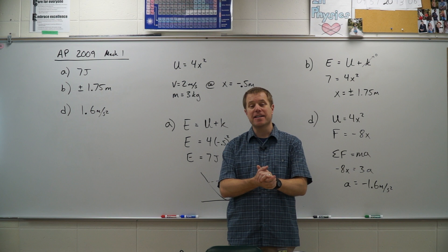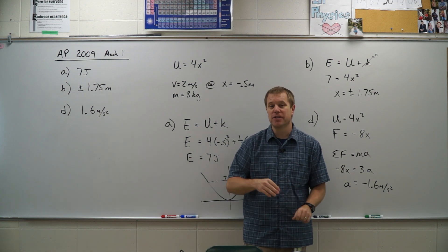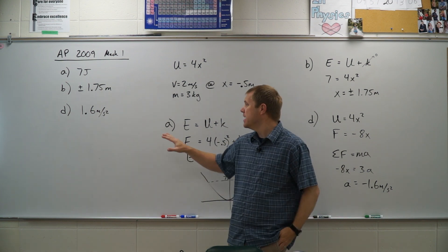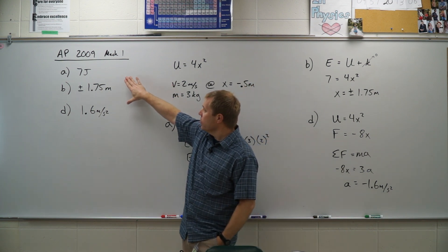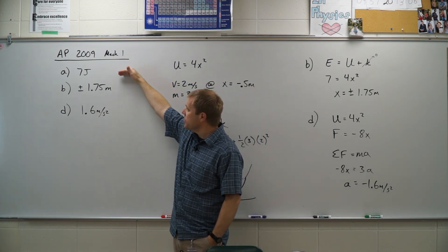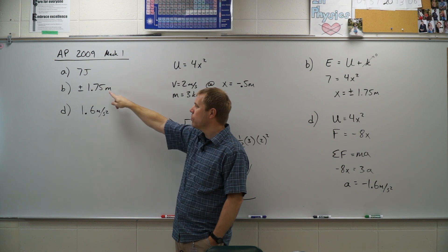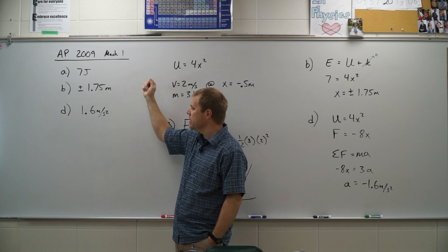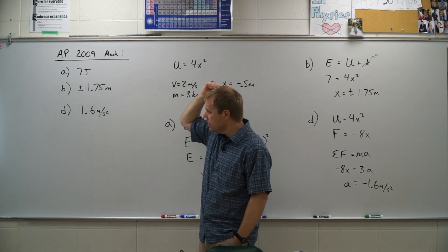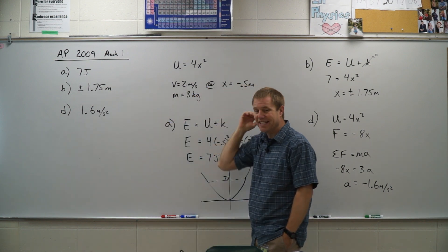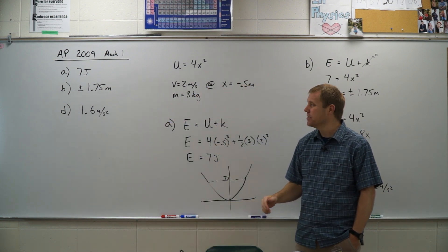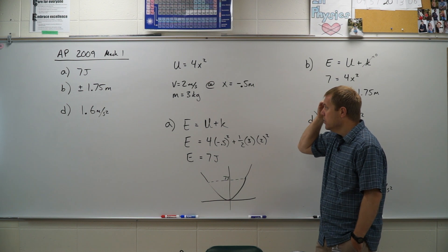Alright, so you tried this practice AP question — let's see how you did. Here are the correct answers: 7 joules, plus and minus 1.75 meters, and 1.6 meters per second squared.